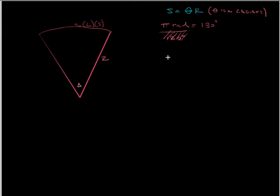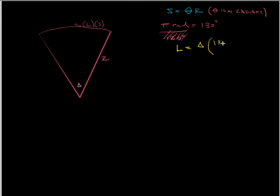L, which is S, is equal to delta — the angle subtended by the arc — times 180 over pi, times R. Because theta needs to be in radians for the formula, this conversion gives us degrees. Radians cancel and we get degrees. So that's the definition for the length of a curve.